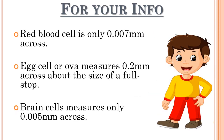Here is some information helpful for your objective section: a red blood cell is only 0.007 mm across; an egg cell or ovum measures 0.2 mm across — about the size of a full stop — and is the largest cell in the human body; brain cells are the smallest cells in the body at only 0.005 mm. In the next session we will study about tissues. Please give page number 5 a good reading. I hope you have understood the lecture well. Thank you for listening.